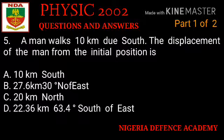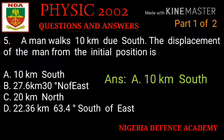Question number five: a man walked 10 kilometers due south. The displacement of the man from the initial position is what? Option A: 10 kilometers south. Option B: 27.6 kilometers, 30 degrees north of east. Option C: 20 kilometers north. Option D: 22.36 kilometers, 63.4 degrees south of east. The right answer is option A — 10 kilometers south.